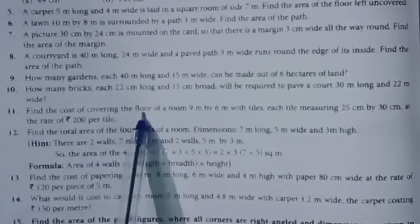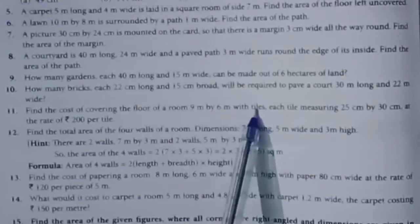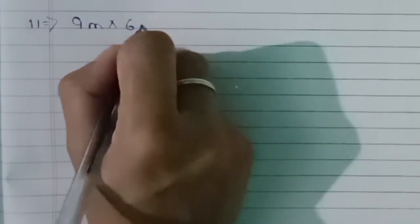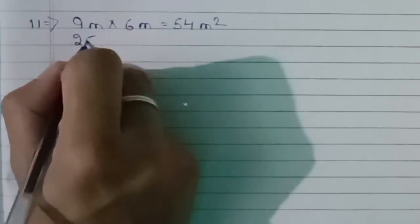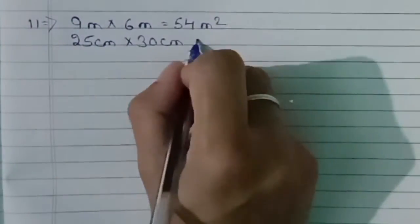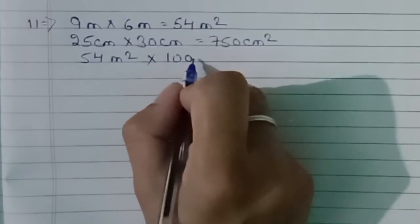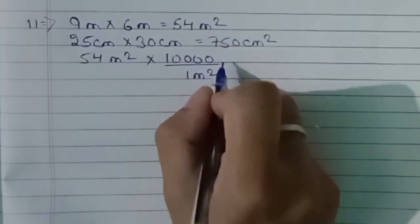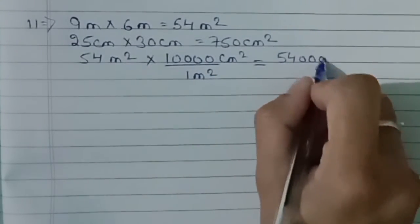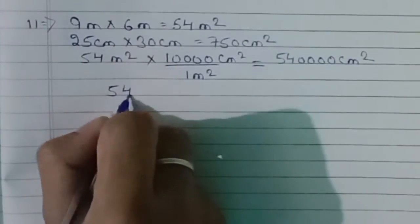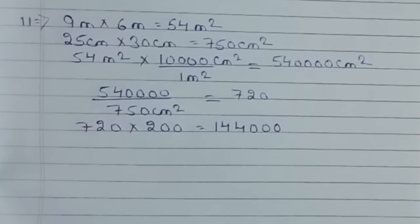Question 11. Find the cost of covering the floor of a room 9 m by 6 m with tiles, each tile measuring 25 cm by 30 cm, at the rate of ₹200 per tile. Area of floor = 9 × 6 = 54 m². Area of one tile = 25 × 30 = 750 cm². Number of tiles = 54 × 10,000 ÷ 750. Total cost = number of tiles × 200.